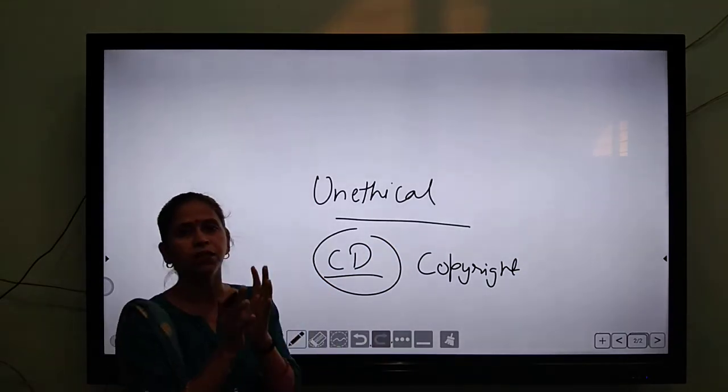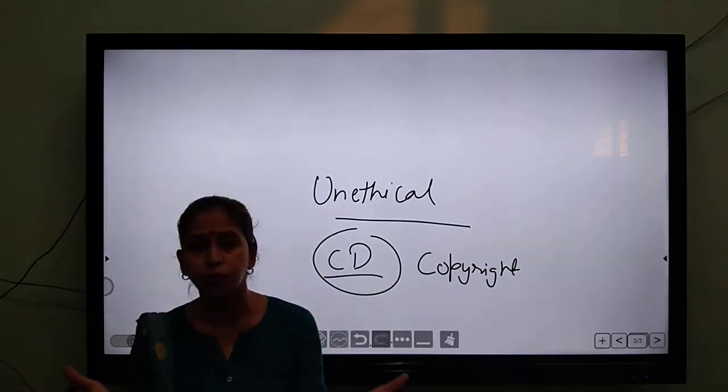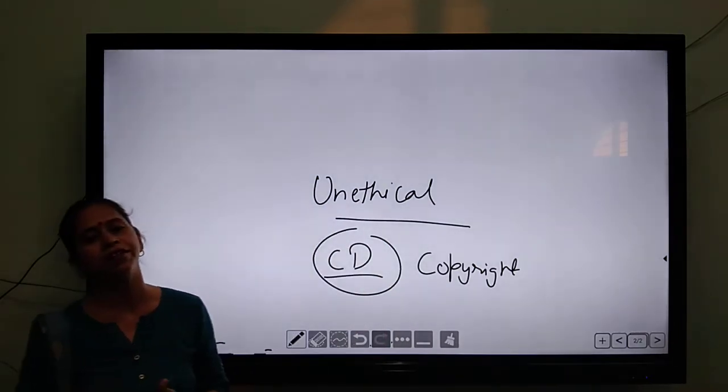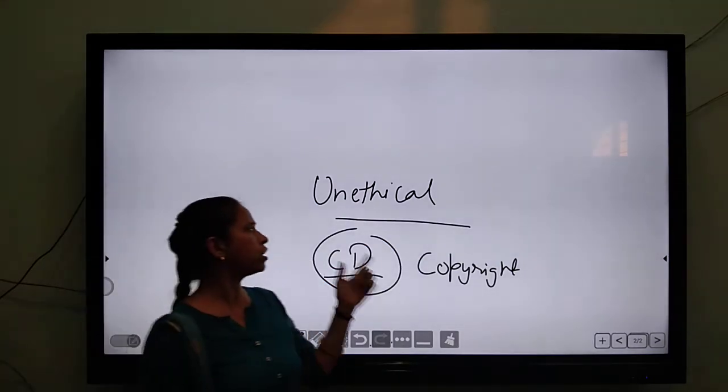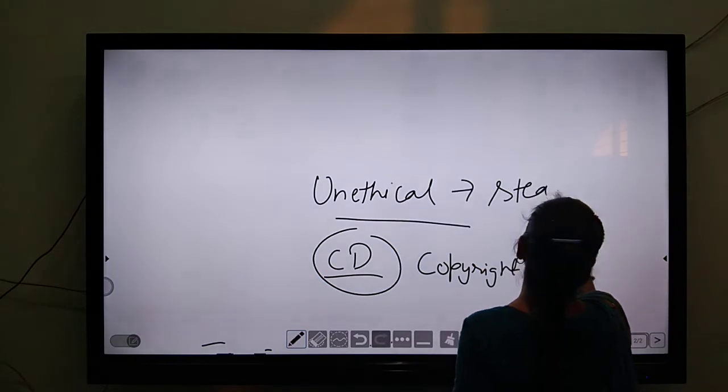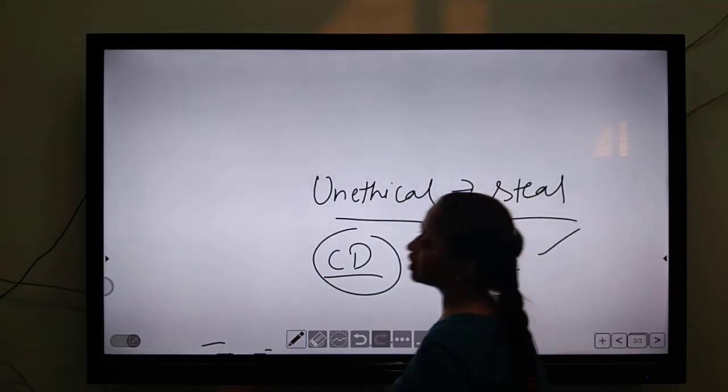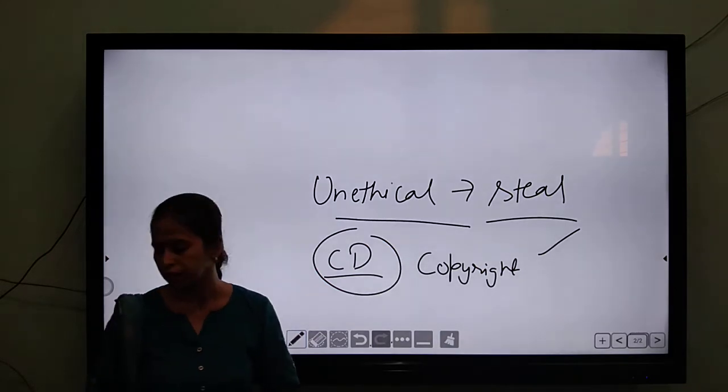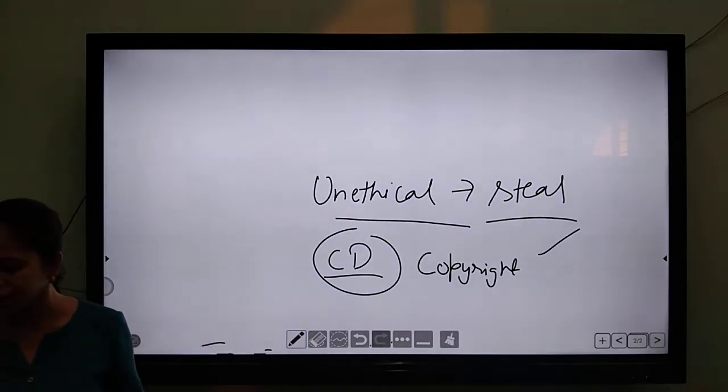So unethical means if you are harming somebody, not only physically but emotionally, you are making theft of somebody's decision. That is known as an unethical thing. And the main example is plagiarism.